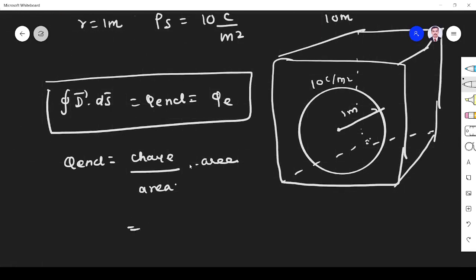Charge per area is given as 10 coulombs per meter squared. The area is the surface area of the spherical sphere, which is 4π times r squared. R is 1 meter for the sphere, so we get 40π.